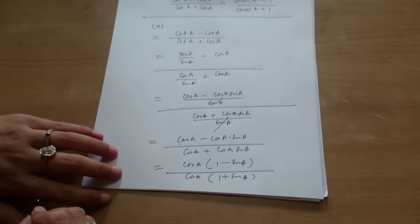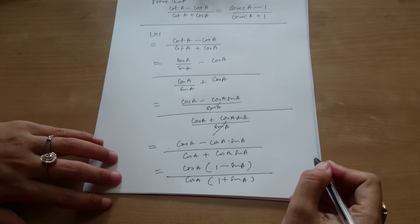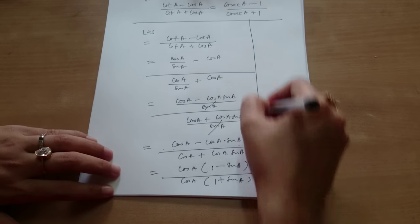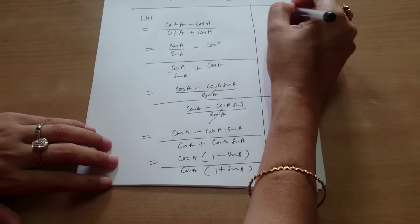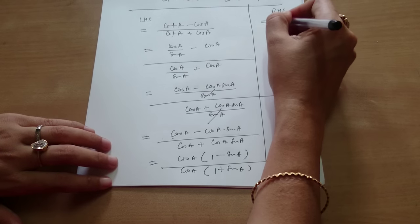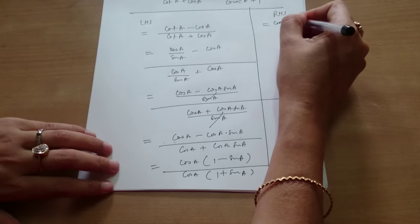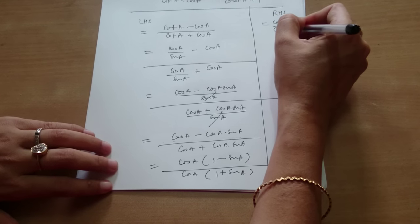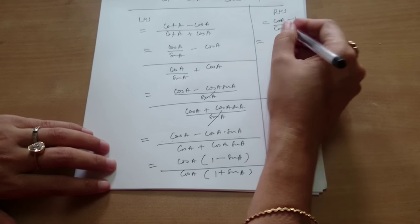RHS. You will solve it separately? Okay, let me do this. RHS: cosecant A minus 1 upon cosecant A plus 1. Which is equal to... What is cosecant A? 1 upon sine.